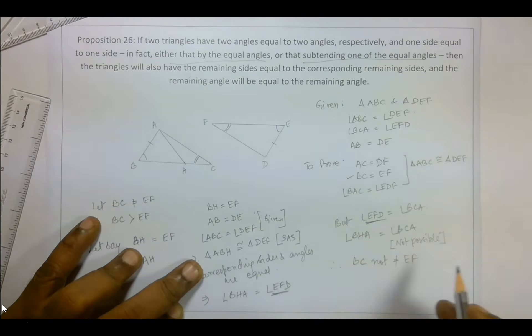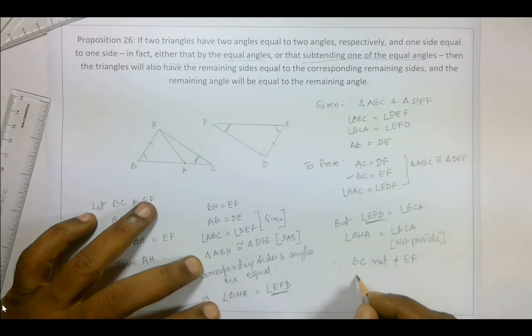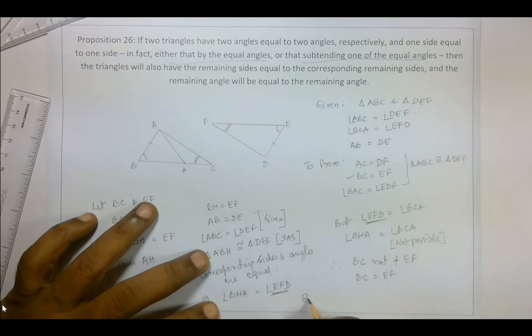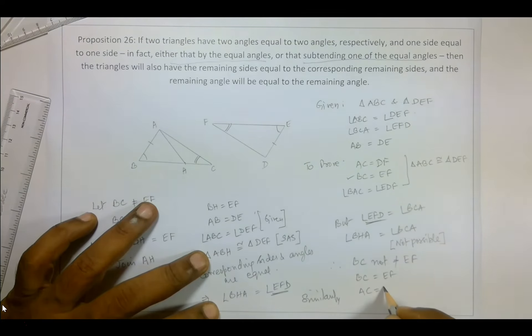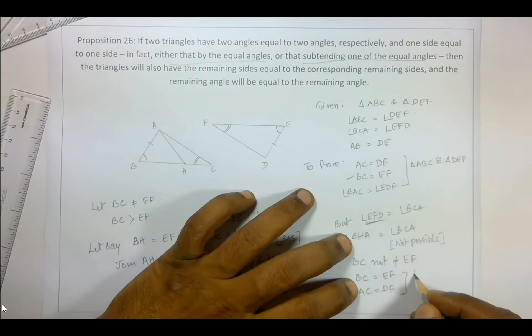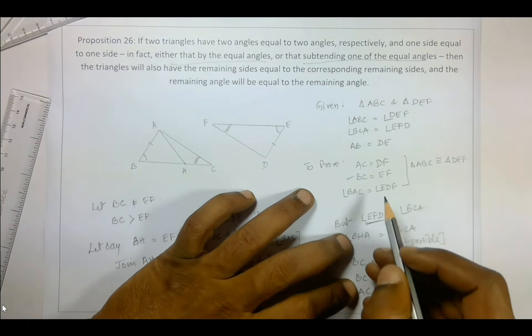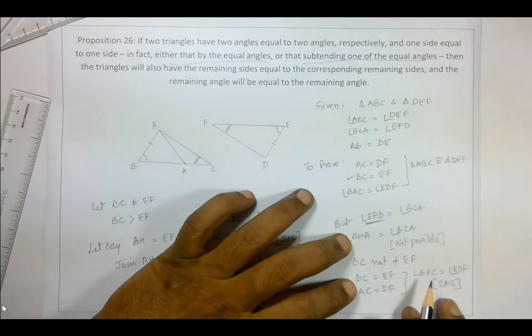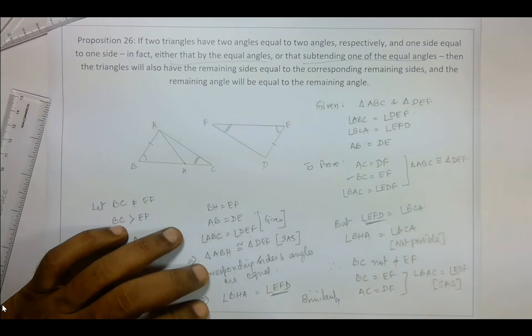So which means that the negative statement is wrong. So which means BC is equal to EF. Similarly we can prove that AC is equal to DF. Now again, which means angle BAC is equal to angle EDF by SAS. So basically which means we have proved that these two triangles are congruent. So that is Proposition 26 in two parts.